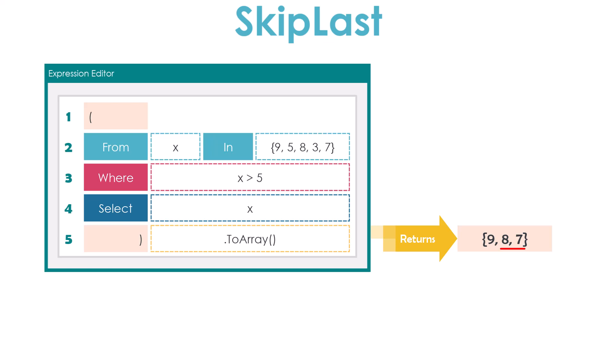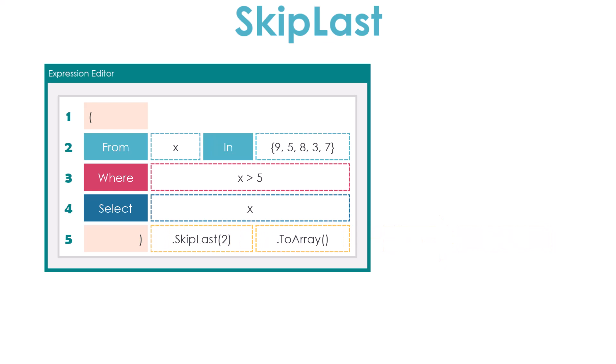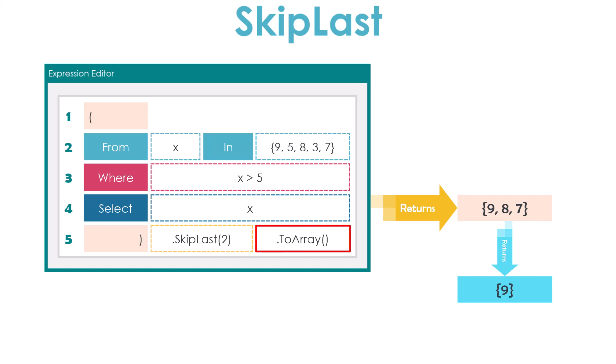We can also use the Skip Last operator, which is easier than the other operators. I will use this operator after the query because I want to filter the output of the query. I only write the operator with number two to skip the last two elements. As you know, the result of the query is a collection containing three numbers. Now using Skip Last operator means I want to get all numbers except the last two. The query now returns only one number as an array. Please make sure you add a conversion operator after Skip Last to convert the output to a specific data type — like here I use ToArray to convert the output to an array, because Skip Last always returns an enumerable collection.